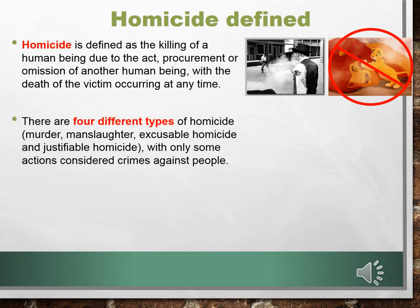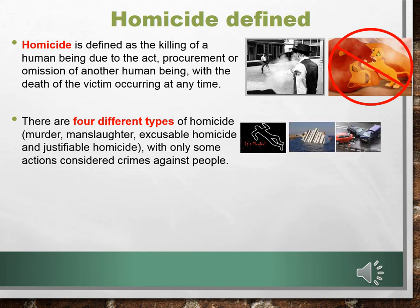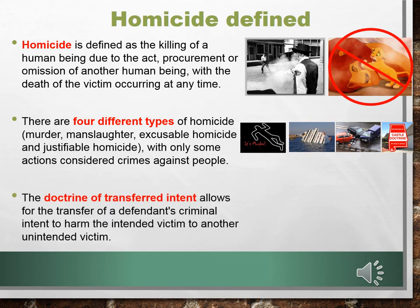There are four different types of homicide: murder, manslaughter, excusable homicide, and justifiable homicide. Only some homicidal actions are considered crimes against people — in other words, not all homicides are crimes. We also have the doctrine of transferred intent, which allows for the transfer of the defendant's criminal intent to harm the intended victim to another unintended victim. This doctrine is not just found in homicide; it's found in all crimes against people.